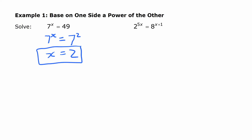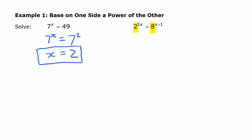Even if it's not obvious what the value of x is, you can use that same strategy by writing each side as an expression with the same base. We're looking at ones where the bases are related — 2 and 8 are both powers of 2. On the left side, we leave it alone because it's already a power of 2. On the right side, we change 8 into 2 to the third, and keep everything else the same — x plus 1 there.